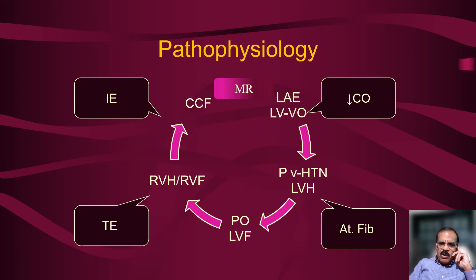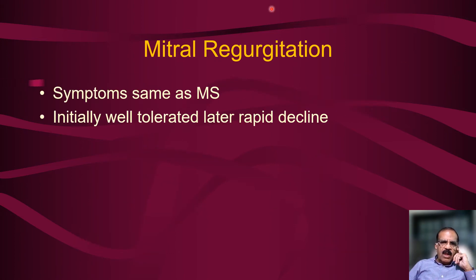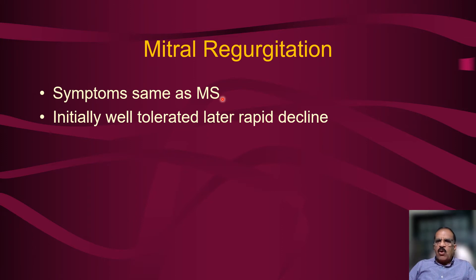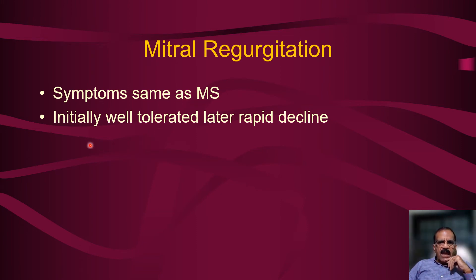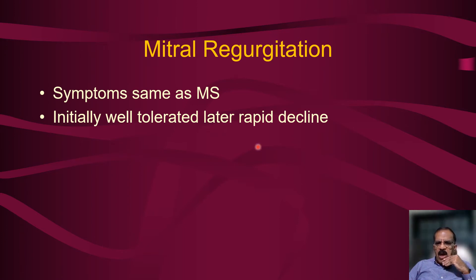Complications include reduction in cardiac output, atrial fibrillation, thromboembolic phenomena, and infective endocarditis — any of which can deteriorate the condition and make the patient very symptomatic. Symptoms are the same as in mitral stenosis: progressive dyspnea, initially on exertion, then on minimal exertion, then at rest. The patient may become orthopneic, unable to lie flat or sleep because of pulmonary edema. Initially well tolerated, but once symptomatic, there is rapid deterioration.